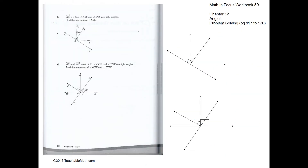Question 3. AC is a line. Angle ABE is a right angle, and angle DBF is also a right angle. Our job is to find angle FBC.